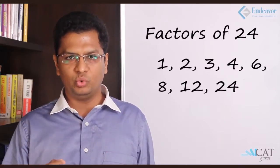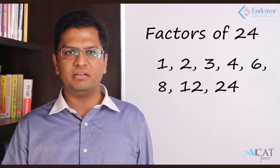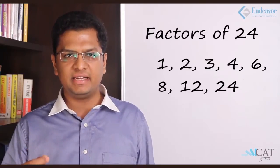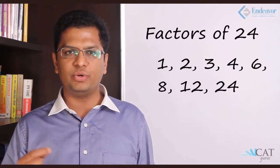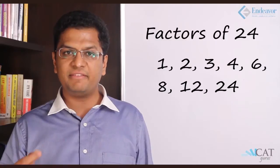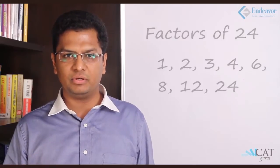Let's talk about factors today. How many factors does a number have? Let's take an example of number 24. For 24 it's very simple, so let's count: 1, 2, 3, 4, 6, 8, 12 and 24. So in all there are 8 factors of 24. But what if we have to do it more scientifically, or extend it to bigger numbers?